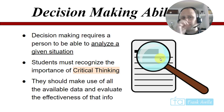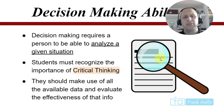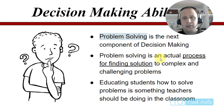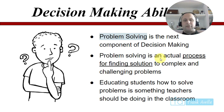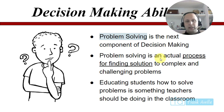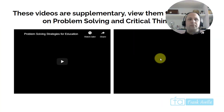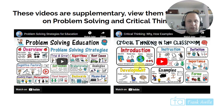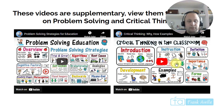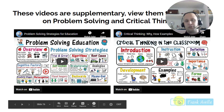Decision making requires a person to be able to analyze the situation. Students must recognize the importance of critical thinking and make use of all available data, evaluating the effectiveness of that information. Problem solving is the next component of decision making — it's the actual process of finding solutions to complex problems. Educating students how to solve problems is something teachers should be doing in the classroom. I have supplementary videos on teaching problem solving and critical thinking in the classroom that I'd recommend for teachers looking to help students in these areas.